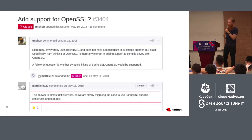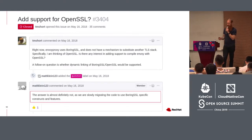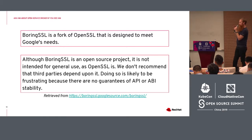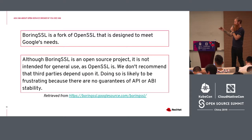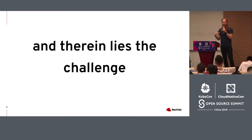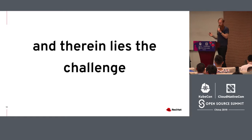And this is where the Faustian bargain comes in. Why would the project decide to make such a turn? We actually have to look at the charter of BoringSSL, which is that it is designed to meet Google's needs. While it is an open source project, it is not intended for general use as OpenSSL is. They do not recommend that third parties depend on it. Doing so is likely to be frustrating because there are no guarantees of API or ABI stability. And there lies the challenge — a switch was made to a project aligned around the interests of a single corporation.